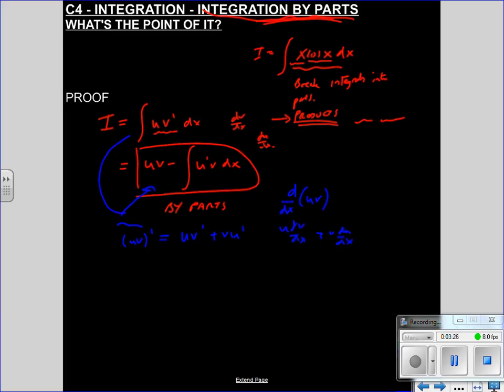We know that that's the same as u v dash plus v u dash, or u dv by dx plus v du by dx. How do we get from here though to here? Well, let's do it. We know what we're trying to find, this u v dash, so if we make u v dash the subject, so u v dash is u v all differentiated minus v u dash.